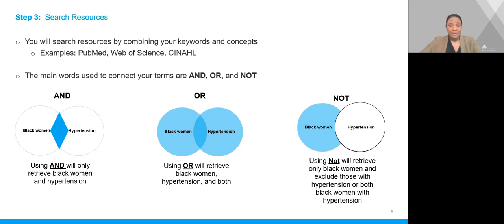Examples of resources are PubMed or Web of Science. The main words used to connect your terms are AND, OR, and NOT. Using AND will only retrieve results containing both Black woman and hypertension, as shown in the blue section of the first image. Using OR would retrieve Black woman, hypertension, and both — the entire two circles are highlighted in blue. Using NOT will retrieve only Black woman and exclude those with hypertension or both, as shown in the blue highlighted circle.